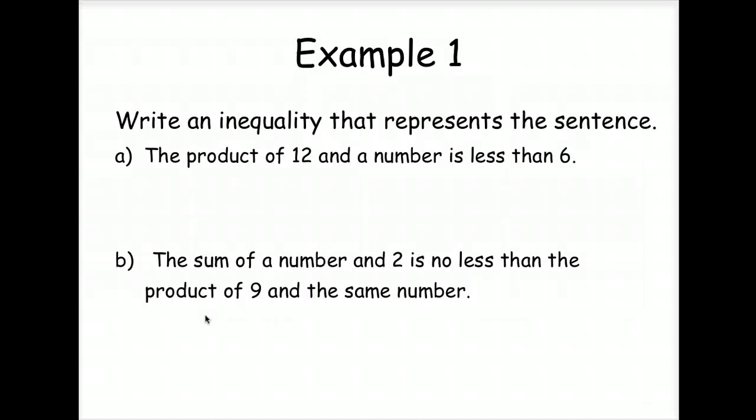So we're to write an inequality that represents the sentence. The product, so what operation are we performing? Yes, we're multiplying the product of 12 and a number. So let's use n to represent a number, or we could use x to represent a number. The product of 12 and a number is less than 6. So 12 times x is less than 6, or 12n could be less than 6. The sum, so that's the important part of this one, what operation? We are adding the sum of a number and 2 is no less than. So it's not going to be less than 9, is it? So that means it's going to be greater than or equal to. If it's no less than 9, the product of 9 and a number, then it's greater than or equal to.